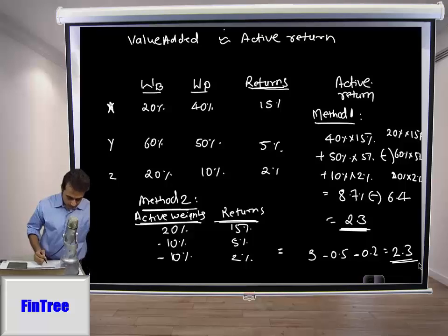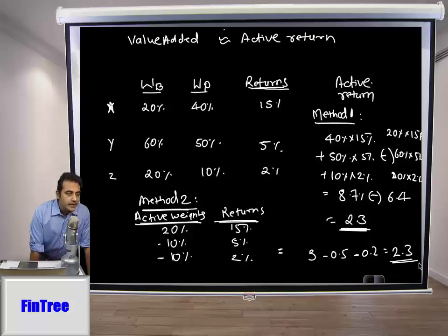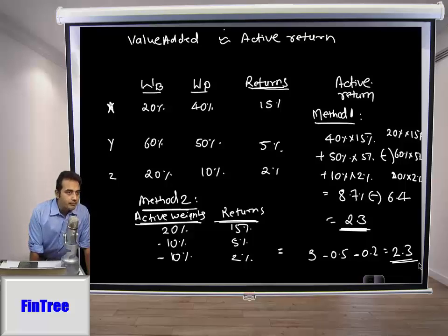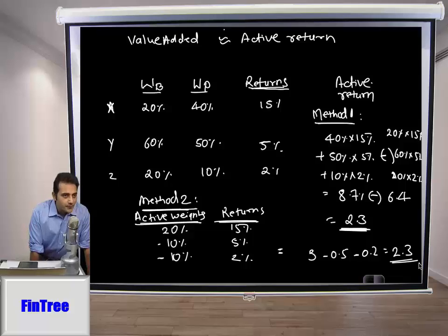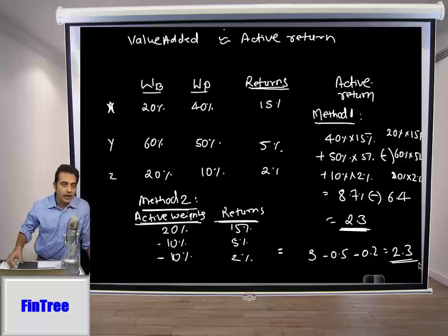The assumption is that the beta of the benchmark and the portfolio is the same — not necessarily 1, but the same for both. If the betas are not the same due to different sectoral allocations, you can assume they offset each other. In the real world, if they don't offset, you can use the alpha-beta separation approach to decompose active return into how much comes from beta and how much from alpha, but that's outside the current syllabus.